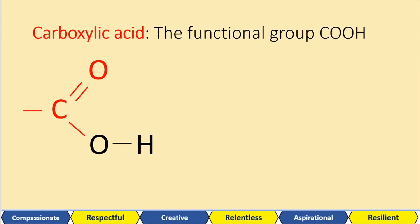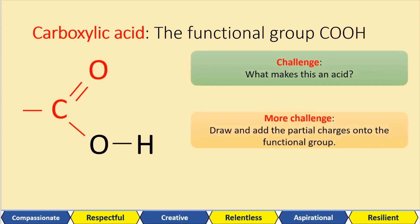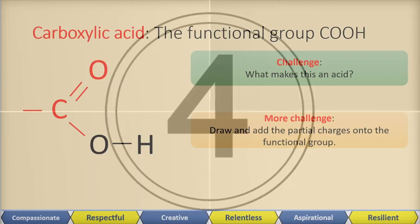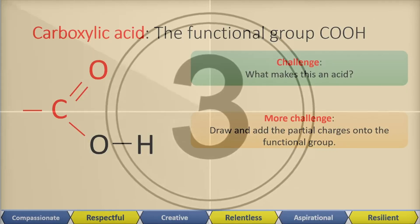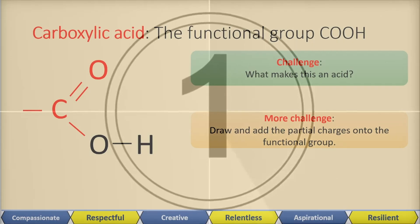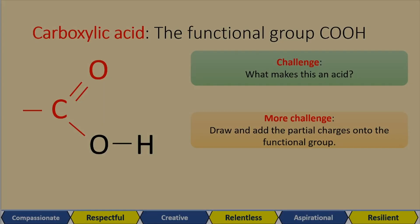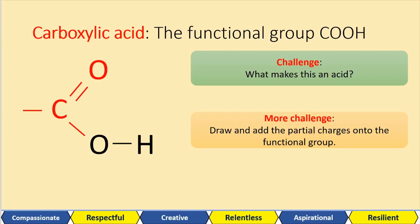Have a go at these challenge questions. When I ask you what makes this an acid, some of you could say it's because it has a hydrogen attached to a relatively electronegative atom. But remember, the main thing about acids is that they donate hydrogen ions — they donate protons.